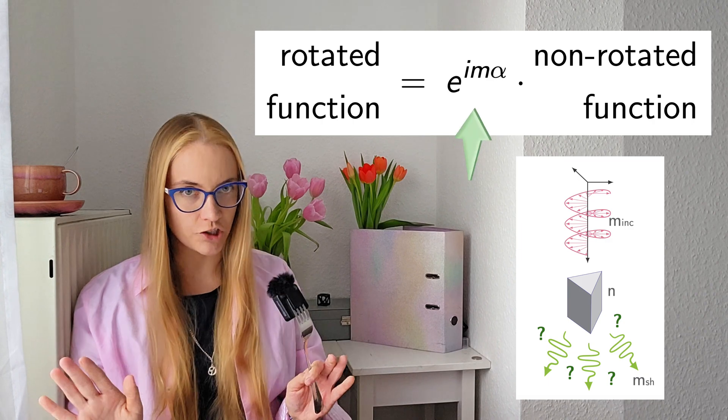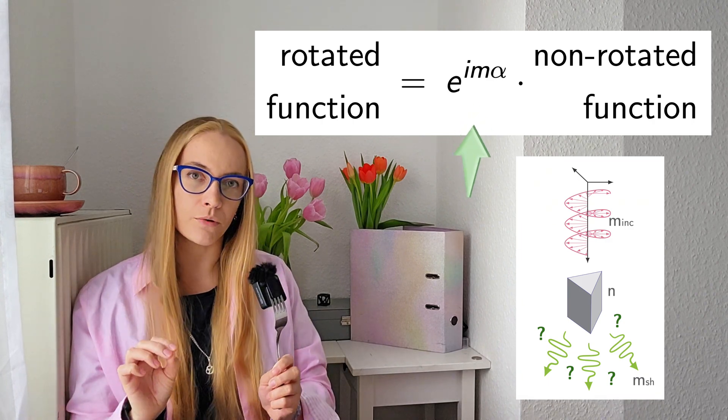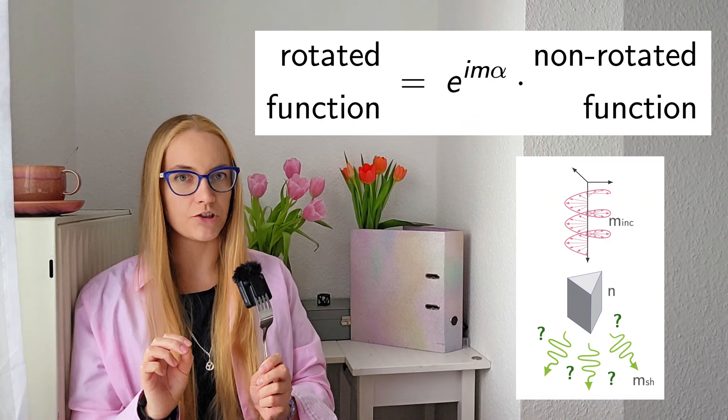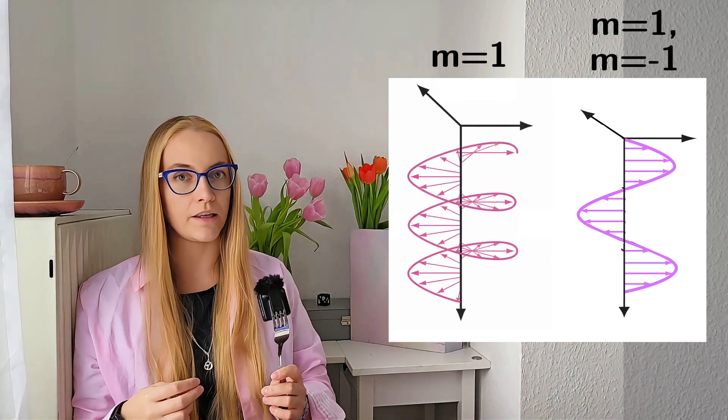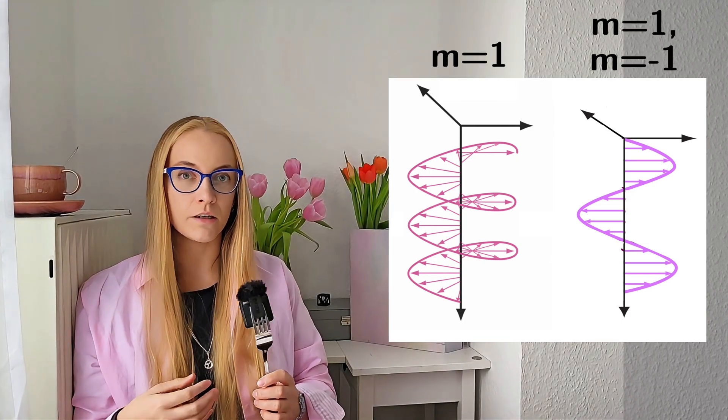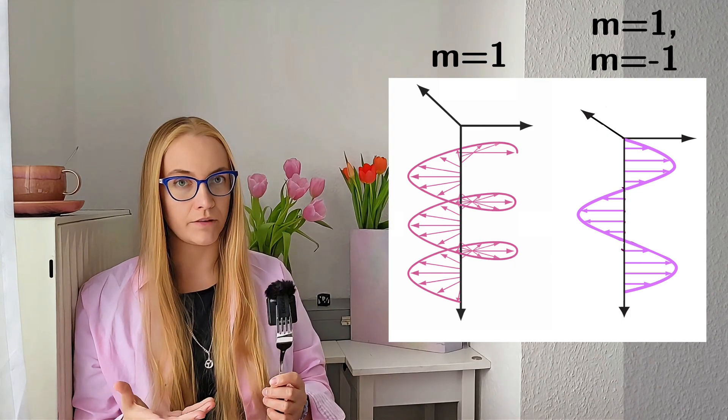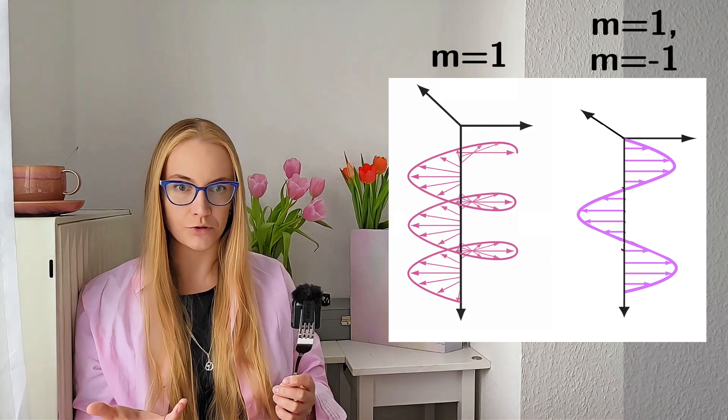The fact that a field possesses a particular m means that under rotation around the z-axis the function doesn't change except for acquiring an additional phase which depends on m. For example, a circularly polarized plane wave has m equal one or minus one, and a linearly polarized plane wave is a linear combination of both. Vortex beams can possess any well-defined m, for example zero, two, whatever, and vector beams are just linear combinations of vortex beams with the opposite m's.